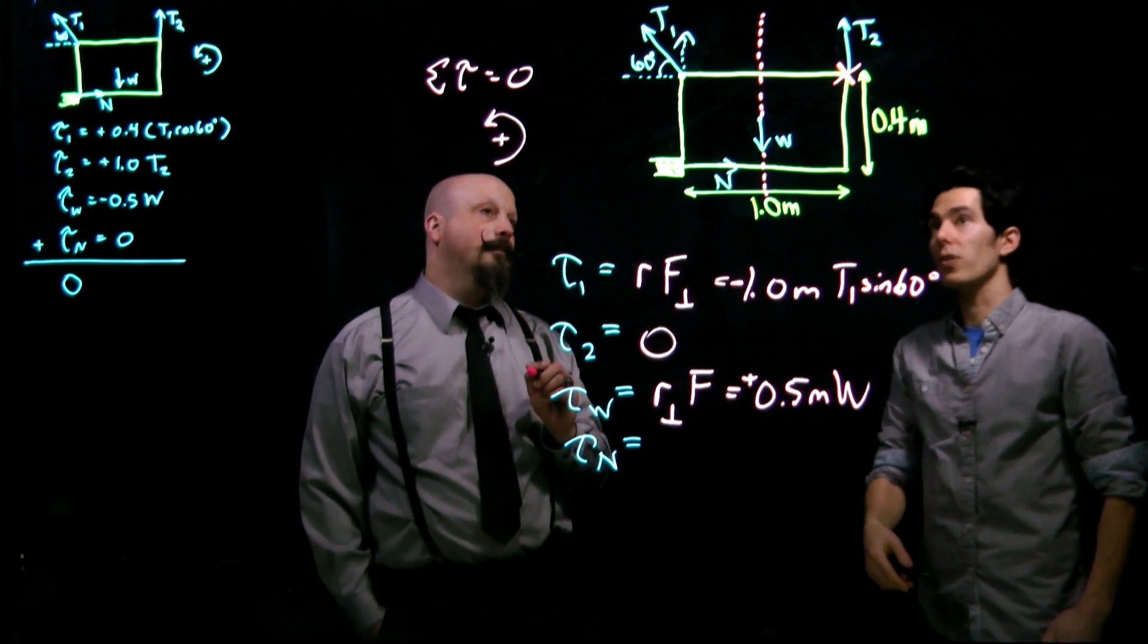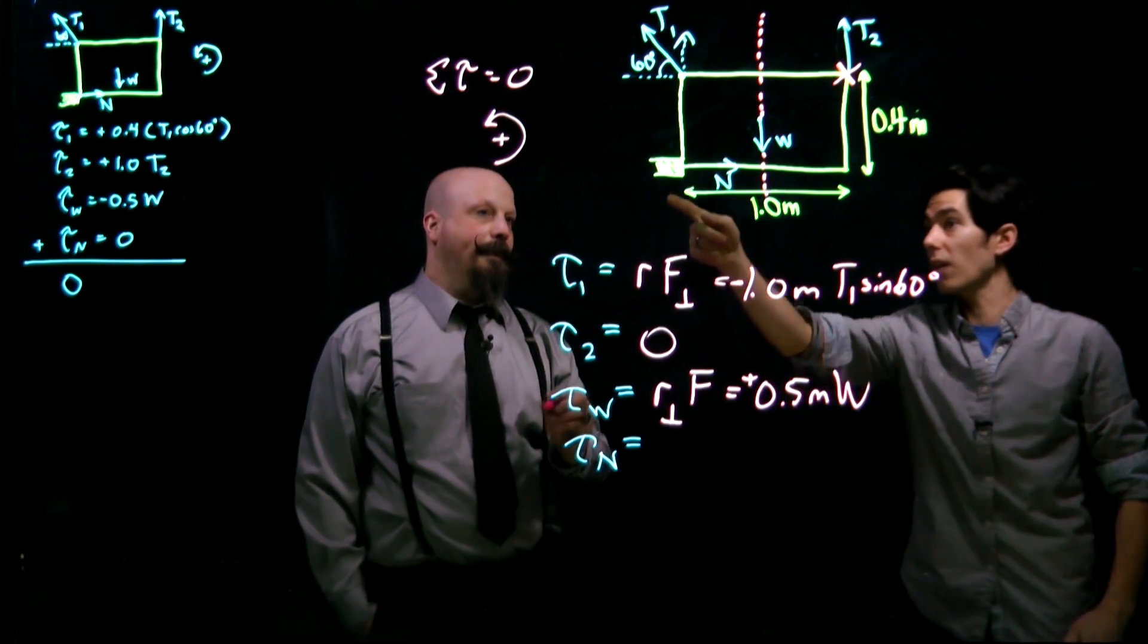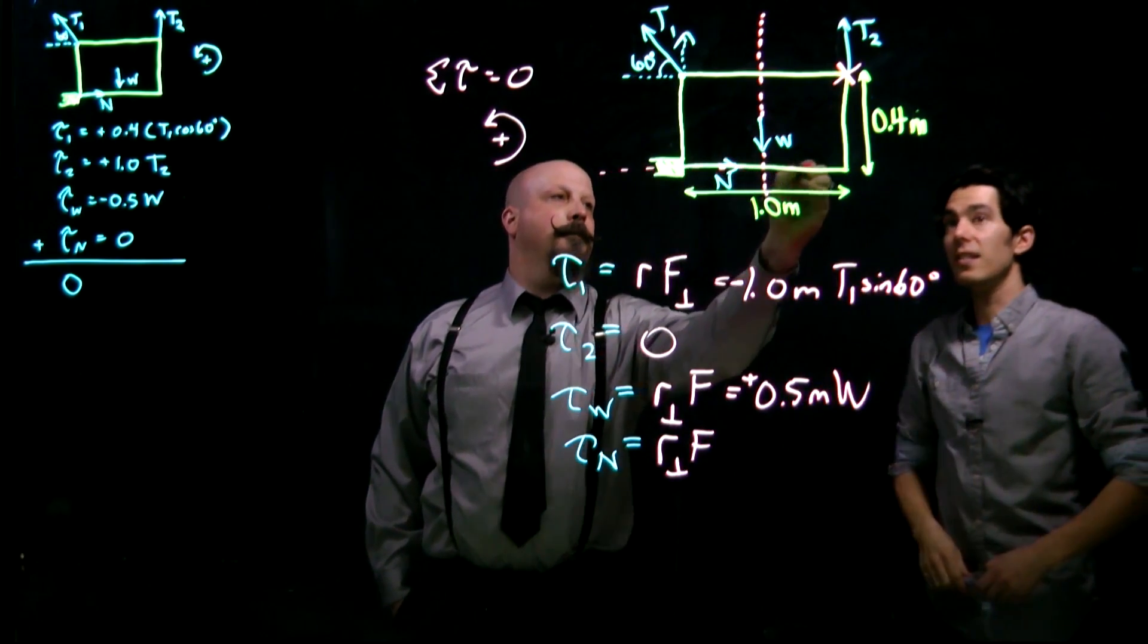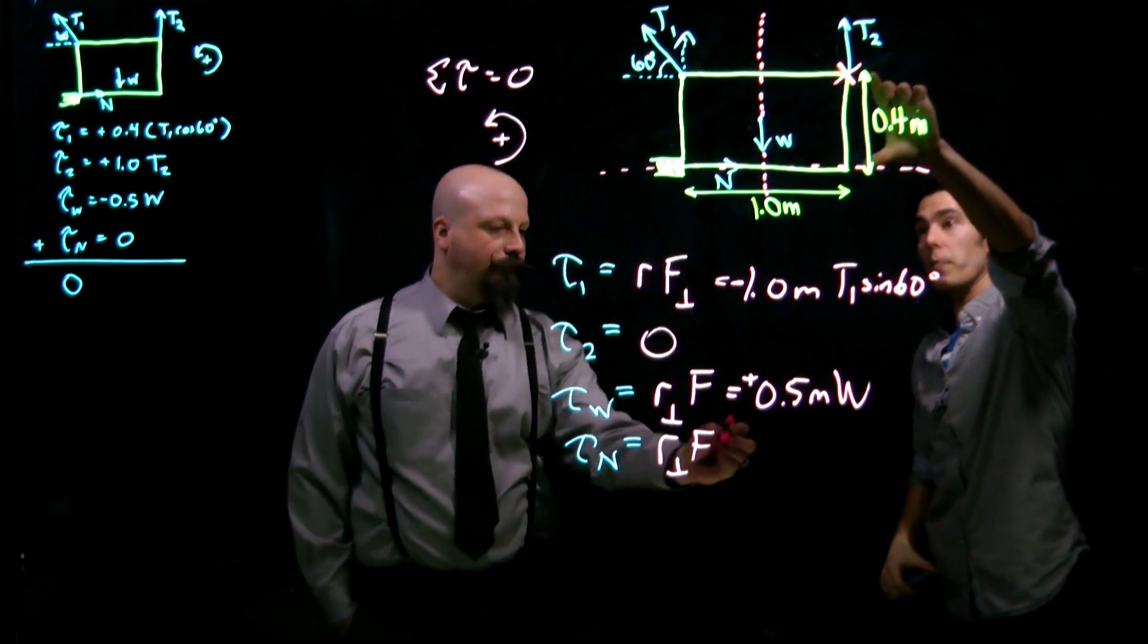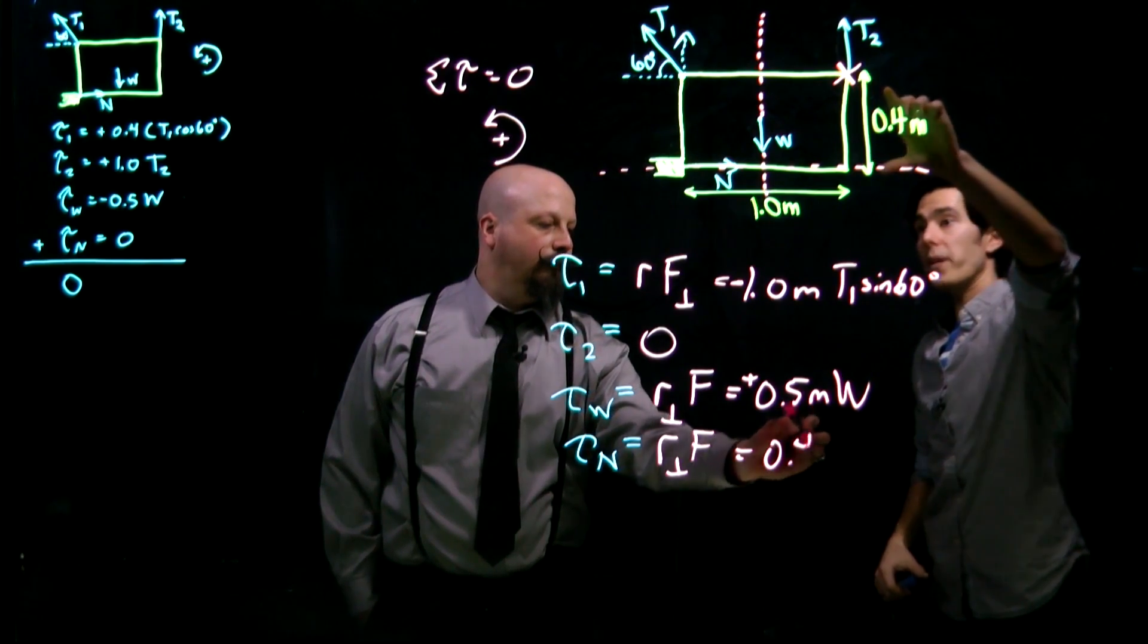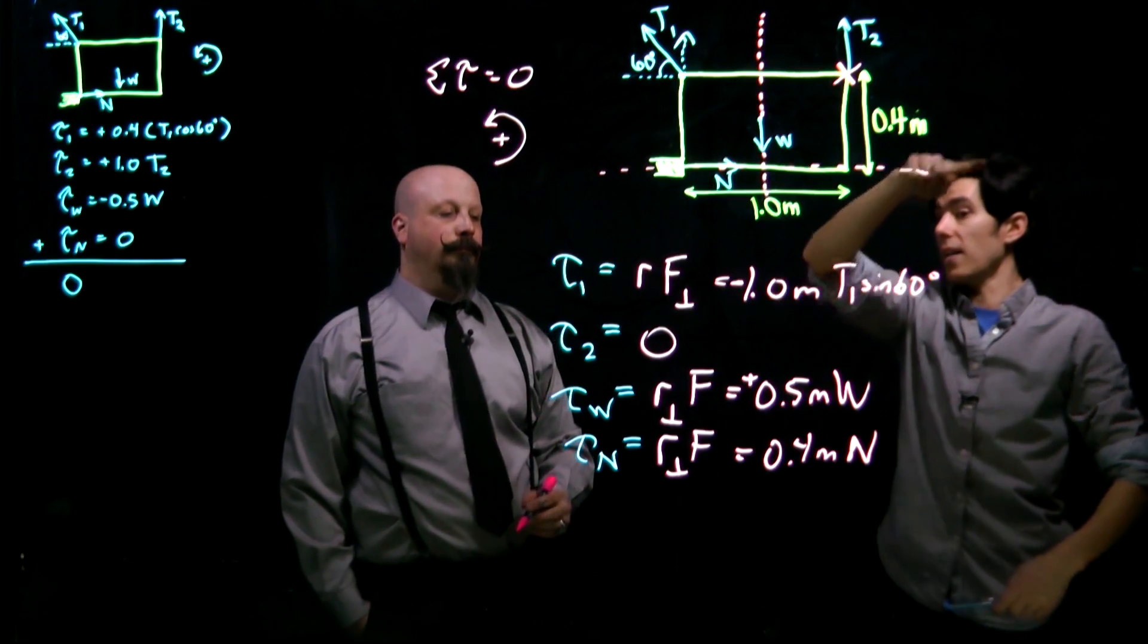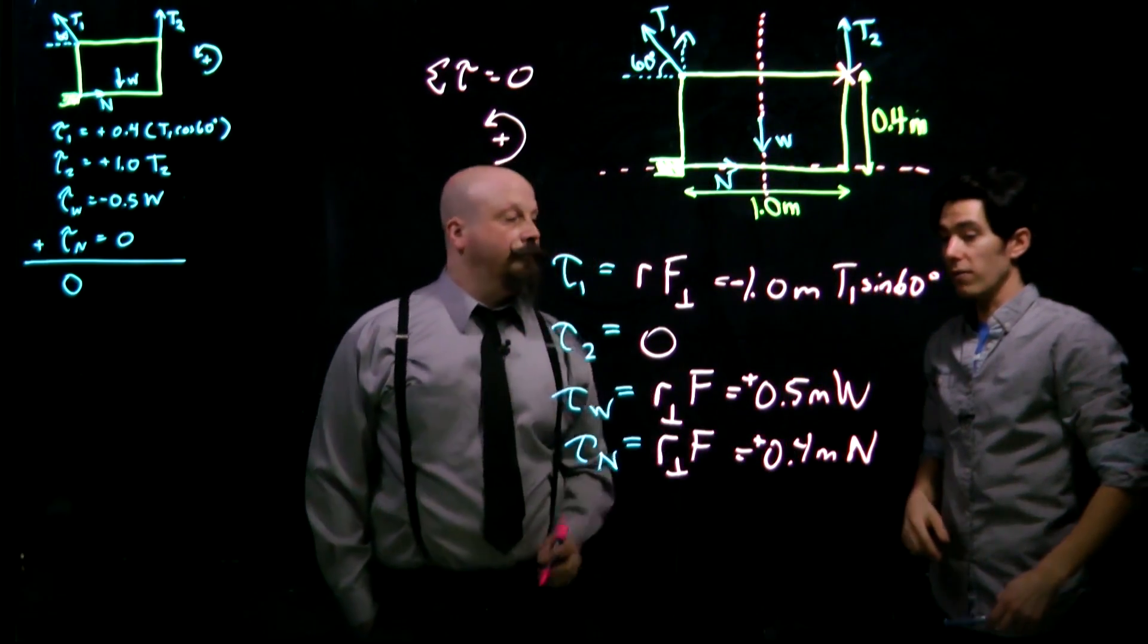Finally, then there's the normal force. And we've got to use the second method again. So the line of action acts right over top of this. That's a distance of 0.4 meters away from the pivot point. So we write 0.4 meters times the full value of the normal force, no component. That's trying to get it to rotate counterclockwise, so again, a positive torque.